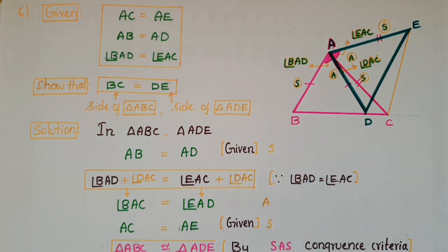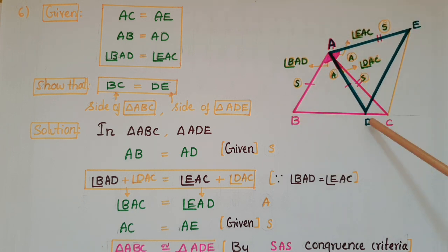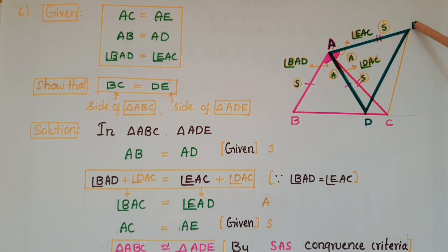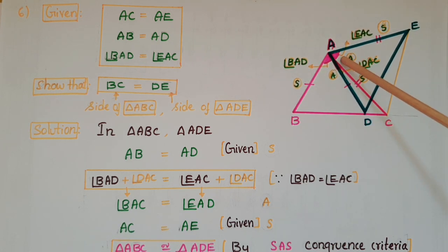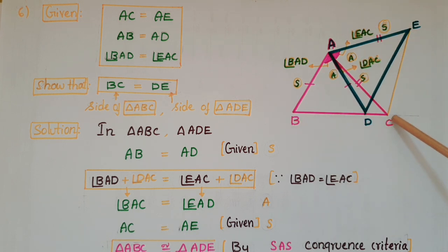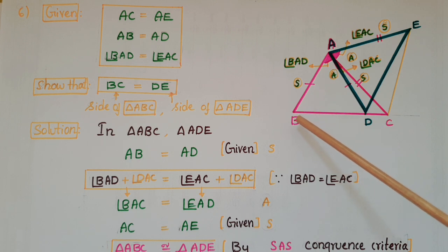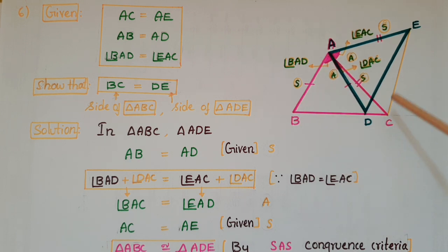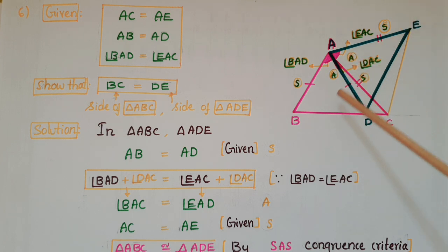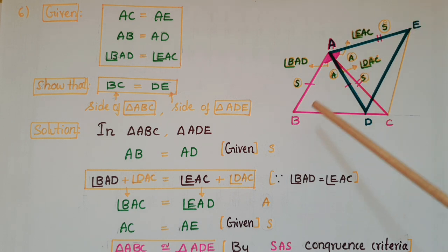This is the 6th problem. In this problem, AC is equal to AE, AB is equal to AD, and angle BAD is equal to angle EAC. We have to prove that BC is equal to DE. BC is a side of triangle ABC and DE is a side of triangle ADE. So, we have to prove that triangle ABC is congruent to triangle ADE, and then we can show that BC is equal to DE.